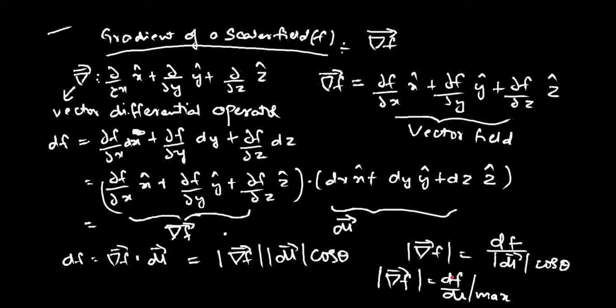The field is the region in space where the effect of some quantity is felt. This field varies from point to point and has some variation within space. How this field varies is determined by the gradient of the scalar field. The gradient tool gives information about how this scalar field varies with respect to space. This is the physical significance of the gradient of a scalar function.